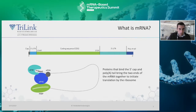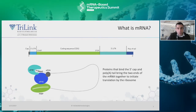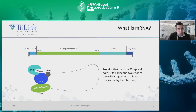Your coding region, the CDS, contains the genetic sequence of your target protein. This is the area of the mRNA that will be translated by the ribosome. There are several ways you can optimize your coding region to allow for more efficient and effective translation of your protein, including codon optimizing for your specific target and depleting the sequence of uridine content. Optimizing your CDS is important and can significantly affect downstream efficacy of your mRNA.